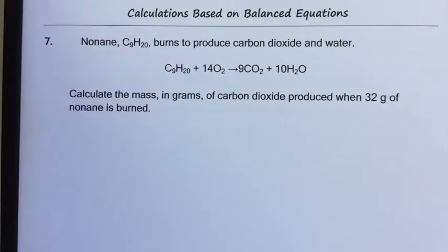Question 7 is a question taken from the 2014 past paper. Nonane C9H20 burns to produce carbon dioxide and water. Calculate the mass in grams of carbon dioxide produced when 32 grams of nonane is burned.